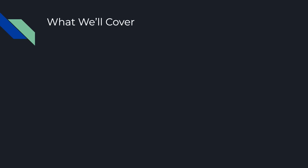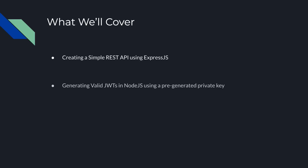So what are we going to cover within this tutorial? We're going to start off by creating a really simple REST API using Node.js and Express.js. This will feature a number of routes — one of which is going to be authenticated and the other unauthenticated, just to give you a comparison. Next we'll look at how you can generate a valid JSON Web Token using a pre-generated private key, and finally how to create an authorization middleware function that will check and authorize incoming requests.